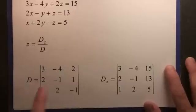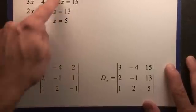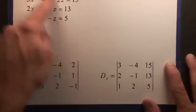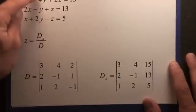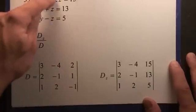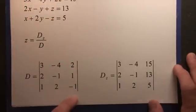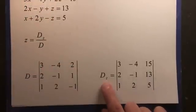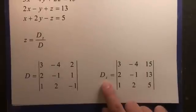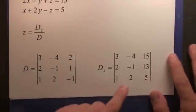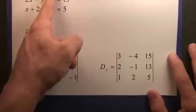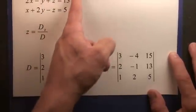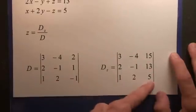So the determinant matrix is the matrix that has the coefficients from the variables on the left side. So 3, 2, 1, negative 4, negative 1, 2, 2, 1, negative 1, right there. Now d sub z, we're going to do this determinant by replacing the z coefficients with the 15, 13, and 5 right there.